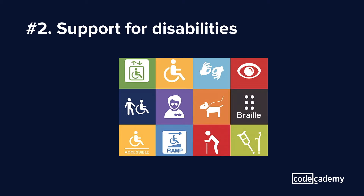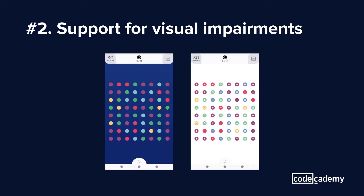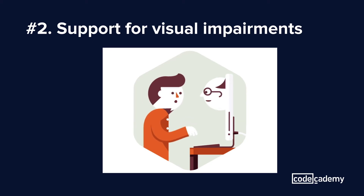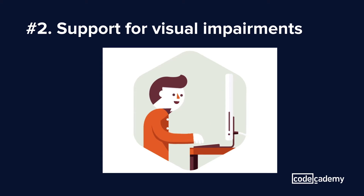Accessibility also means providing support for users with disabilities. The most common ones are visual, hearing, mobility, and cognitive impairments. Accommodation for visual impairments can mean adjusting your colors for people who are colorblind or ensuring the HTML on your website is parsable by screen readers. Screen readers allow your users to identify things like where your buttons are, what's in your content, and so on.